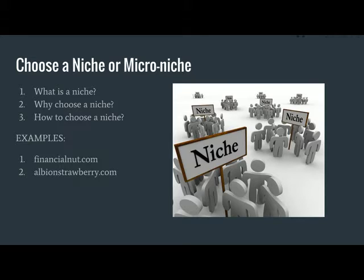Over time, we're going to become the go-to source on the internet for anything about Albion strawberries. They're searched for pretty heavily online, and it looks like it'll be easy to rank for. Now, you've got to be careful picking a micro niche — you need something with enough opportunity to create content. We feel confident there's plenty of content to create here, and therefore plenty of opportunity for Google ads.